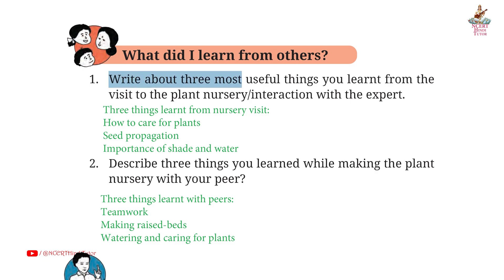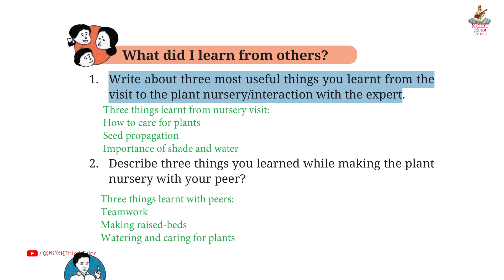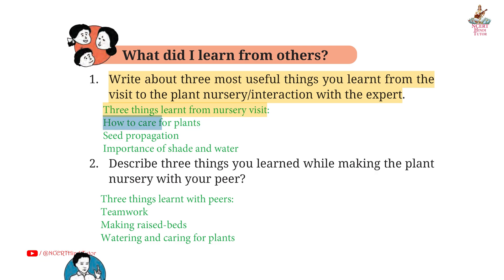Page 23: write about 3 most useful things you learned from the visit to the plant nursery and interaction with the expert. Answer — 3 things learned: first, how to care for plants; second, seed propagation; third, importance of seed and water.